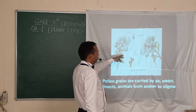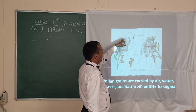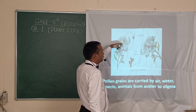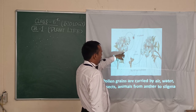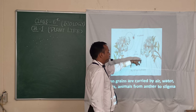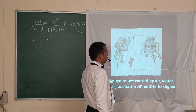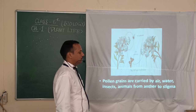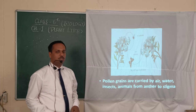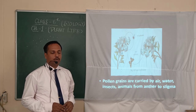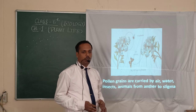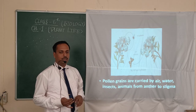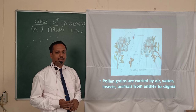As you can see, when pollen grains are transferred within the same plant, this is self-pollination. But when the pollen grains are transferred to another plant, this is cross-pollination. Because pollen grains do not travel directly to flowers on their own, we have agents that carry pollen grains, such as air, water, insects, and animals.